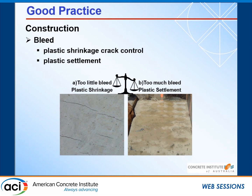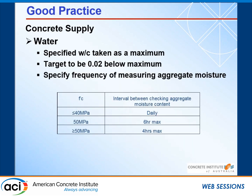From a construction perspective, one example covered in this document is bleed. Too little bleed can result in plastic shrinkage; too much can result in plastic settlement. We want to convey to the contractor what is required from a bleed perspective and the impact that too little or too much bleed can have on durability. For concrete supply, we look at the water used in the actual supply itself from a water-cement ratio perspective — specifying a maximum, targeting 0.02 below that maximum, and then controlling the batching weights including water content in the aggregates.